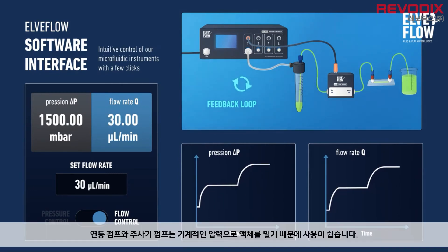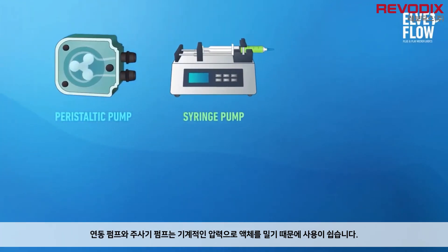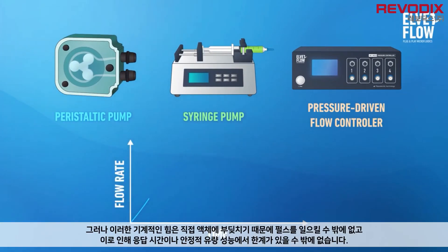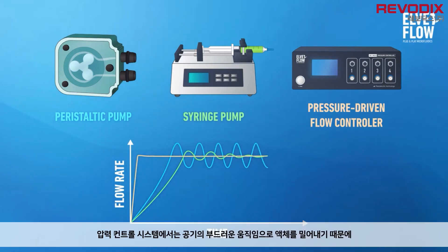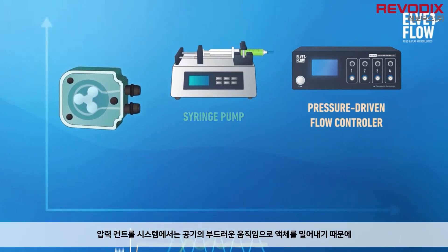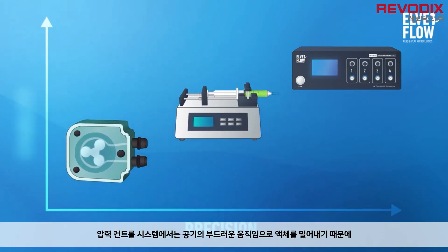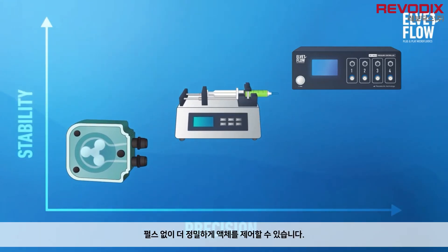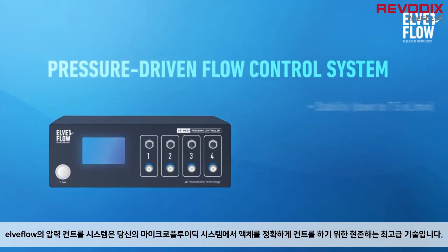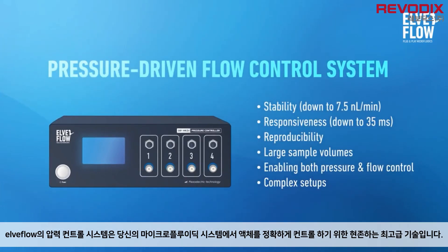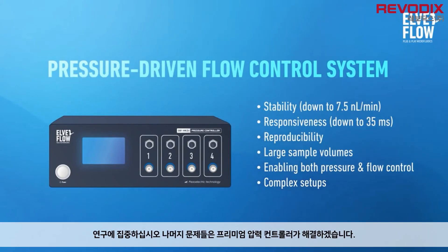Both peristaltic and syringe pumps are easy to use — they push liquids by a mechanical action. Yet this mechanical movement leads to bumps and pulses, limiting performances in terms of response time and flow stability. In a pressure-driven flow control system, the liquid is pushed by a gas in a smoother action, leading to a pulseless flow and a higher flow control accuracy. Pressure-driven flow controlled microfluidics is the premium solution to accurately control fluids in your microfluidic setup.